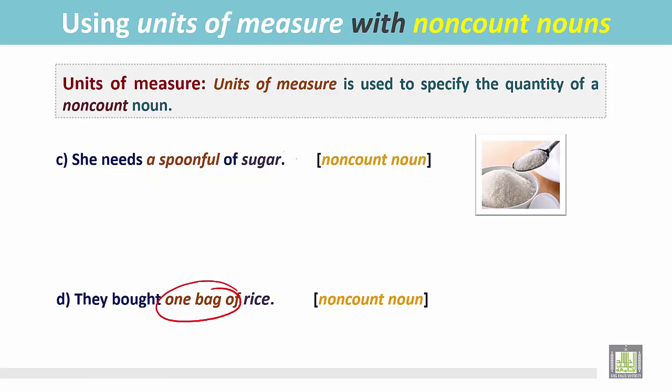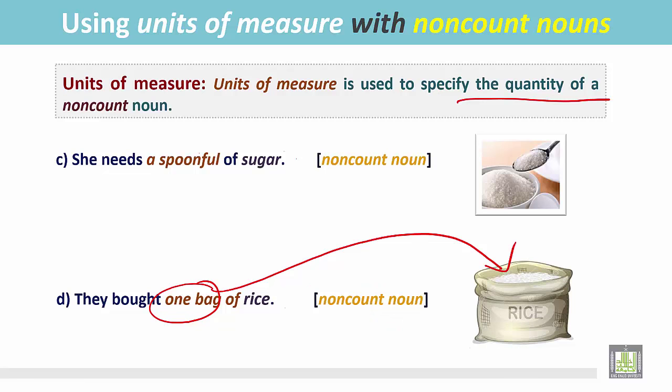They bought one bag of rice. Rice is a non-count noun and one bag is specifying the quantity of this non-count noun.